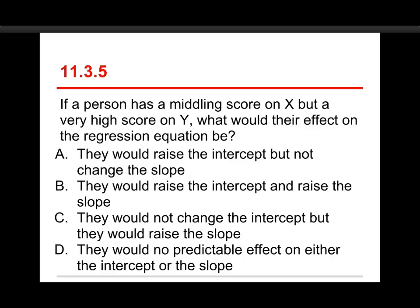Alright, number 5. If a person has a middling score on X, but a very high score on Y, what would their effect on the regression equation be? And the choices are, they would raise the intercept but not change the slope. Or B, they would raise the intercept and raise the slope. Or C, they would not change the intercept, but they would raise the slope. And D, they would have no predictable effect on either the intercept or the slope. Please ignore the typos. The answer to this one is A. They would raise the intercept, but not change the slope.